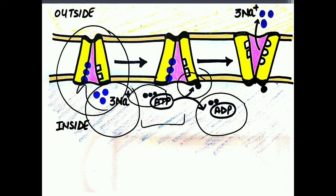This is where ATP utilization occurs — ATP provides the phosphate for phosphorylation of the pump. As phosphorylation occurs, a conformational change takes place. The sodium binding sites become exposed to the cell surface — facing outside the cell. Additionally, the binding affinity of the sodium binding sites decreases, causing the sodium ions that were bound inside to be released outside, because the binding affinity has reduced upon conformational change.